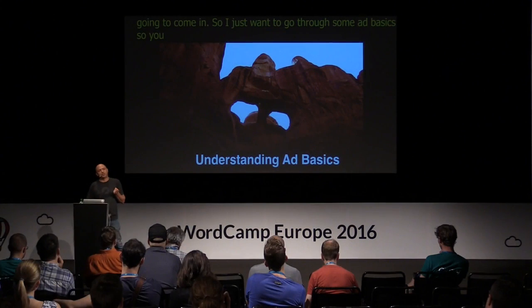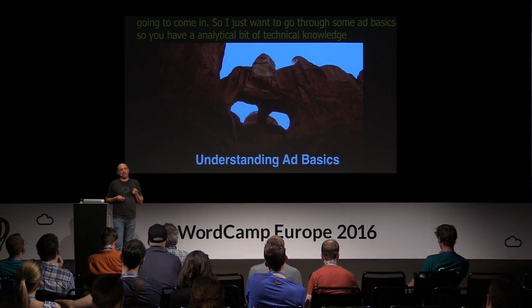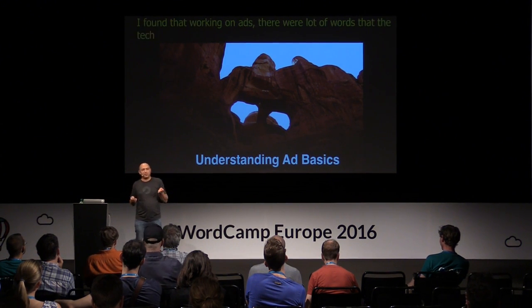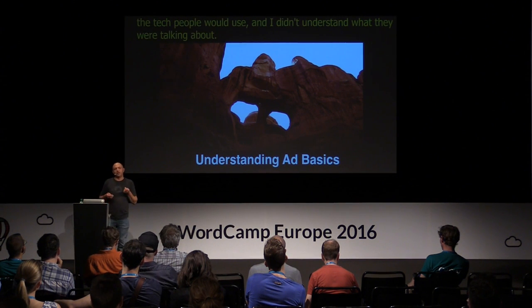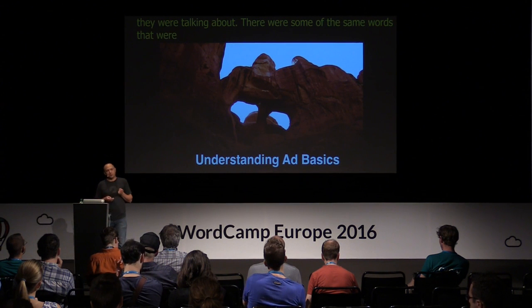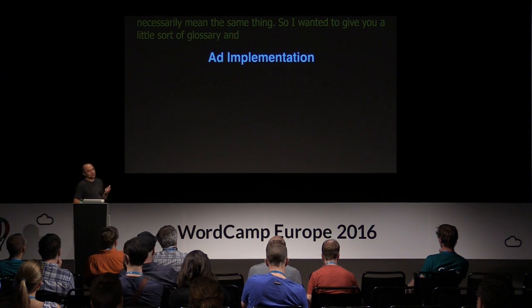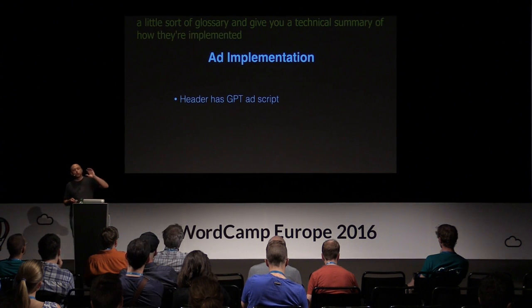I want to go through some ad basics so you have a little bit of technical knowledge. Working on ads, there were a lot of words that the ad ops and ad tech people would use that I didn't understand — some of the same words we use in web development but with different meanings. Basically, with ads, we put a script at the top of the page — that's the GPT ad script — and we put tags in the body for our ad code. That's a basic ad implementation.